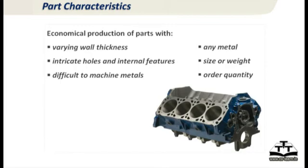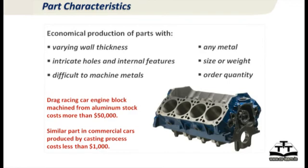This picture you see is a drag racing engine made by machining only, and it costs more than 50,000 dollars. The same type of engine made by casting — as in most commercial vehicles — costs less than 1,000 dollars, maybe half of that. Look at the difference between machining and casting. Life would not be the same if we had to make every part by machining, or if casting were not there. That is the beauty of this process, and it's going to remain for quite some time.